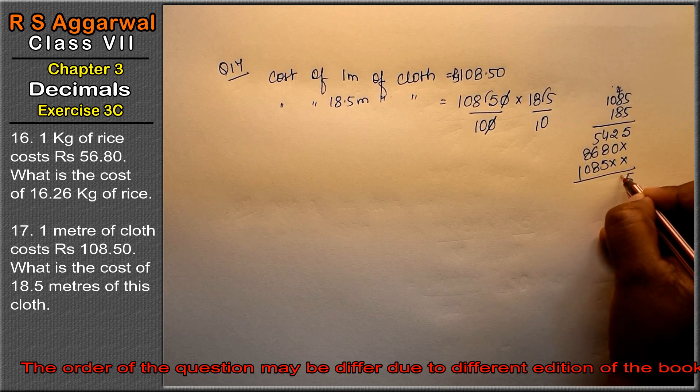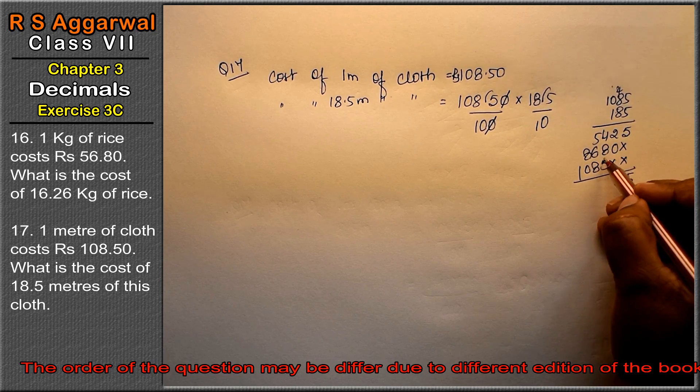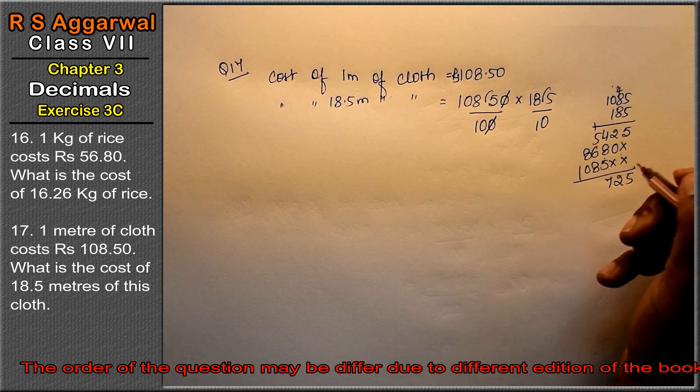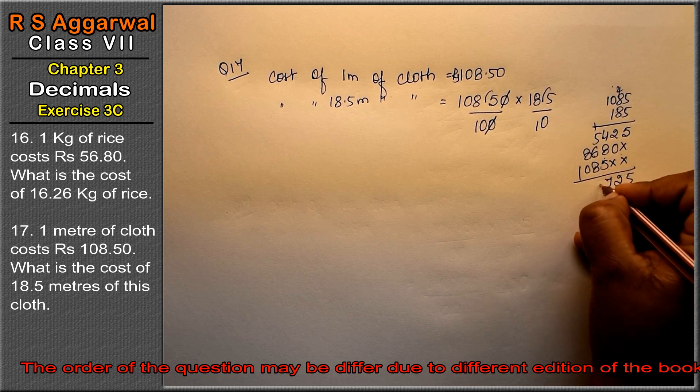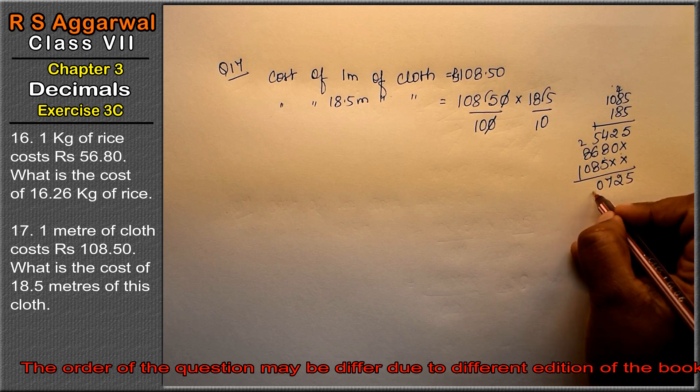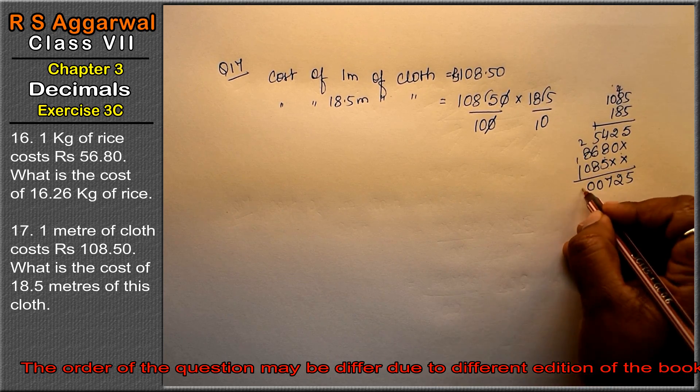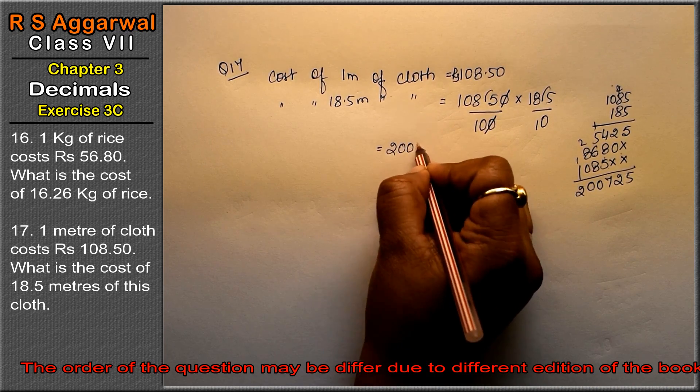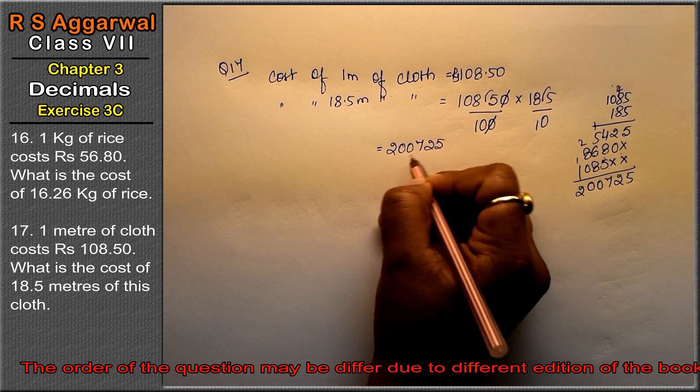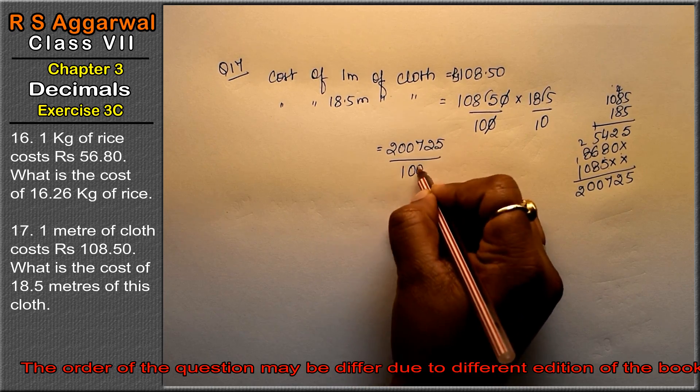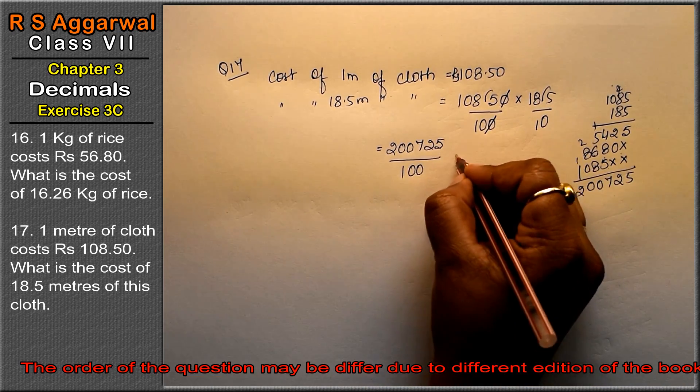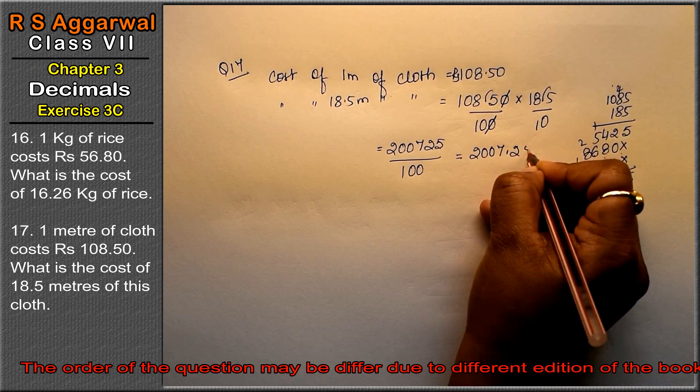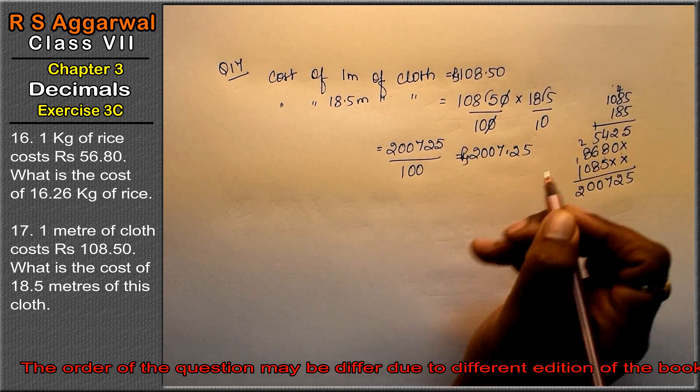So we got 5, carry 1. 2, 13, 14, 15, 16, 17, carry 1. 20, 0, 2, 10, 1, and 2. So we got 200,725 divided by 100. So we got 2,007.25 rupees is the answer.